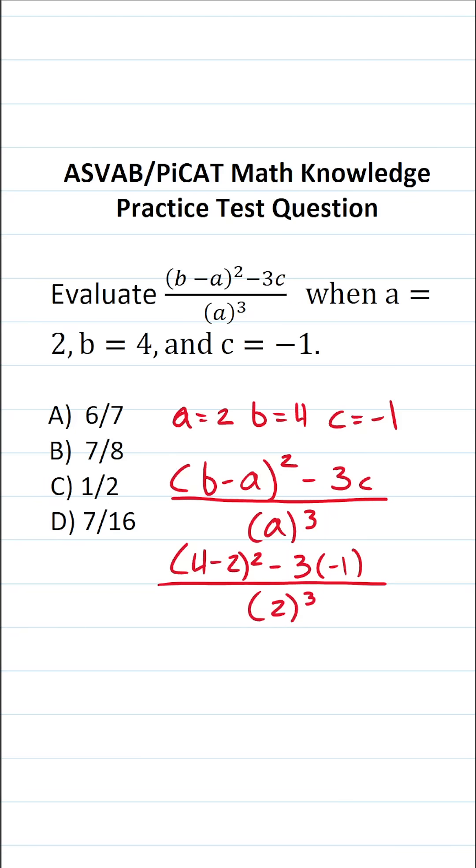4 minus 2 is 2, so this becomes 2 squared. What is negative 3 times negative 1? A negative times a negative is going to be a positive. So negative 3 times negative 1 is going to be positive 3 all over 2 to the third.